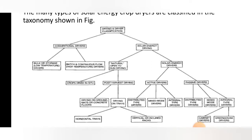Solar energy dryers are again classified into two types: natural dryers, which are open sun dry, and solar energy dryers. Natural dryers are classified into two types: crop dried and post-harvesting dryers. Post-harvesting dryers are classified into drying on ground and drying on trays. Drying on trays is further classified into horizontal trays and vertical or inclined trays.